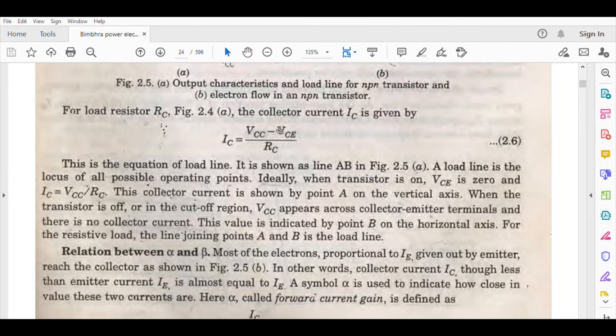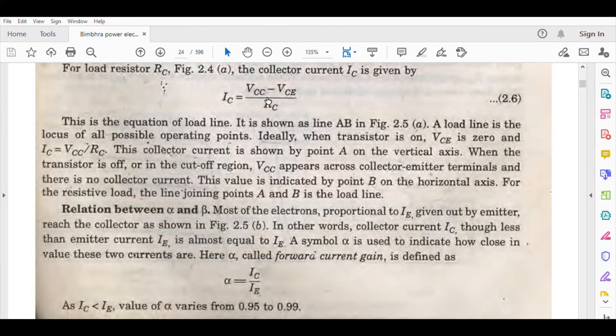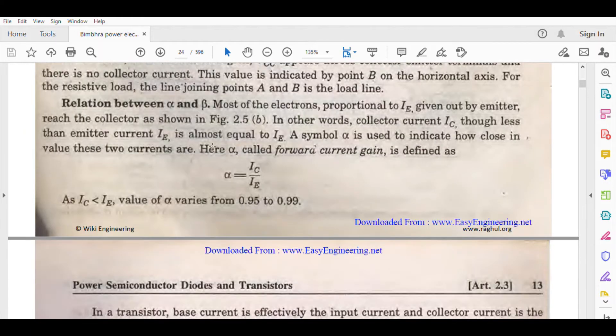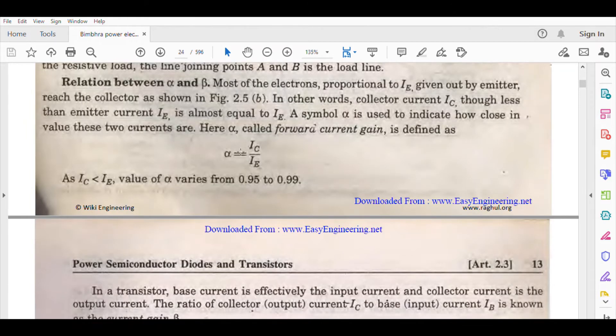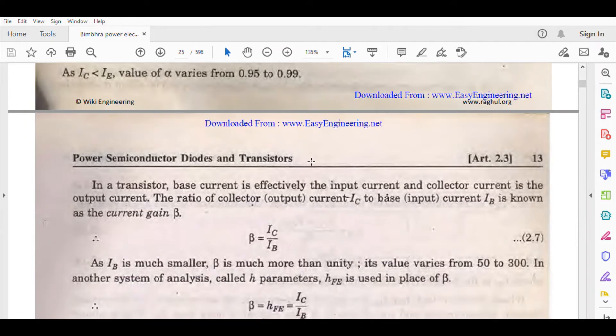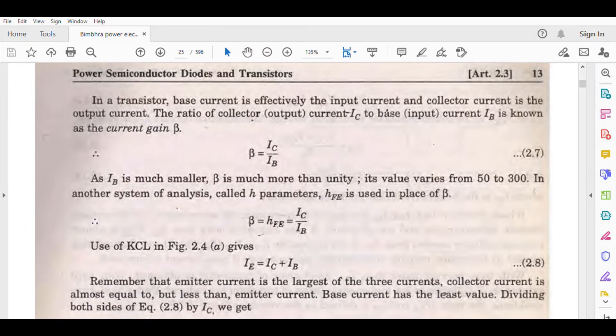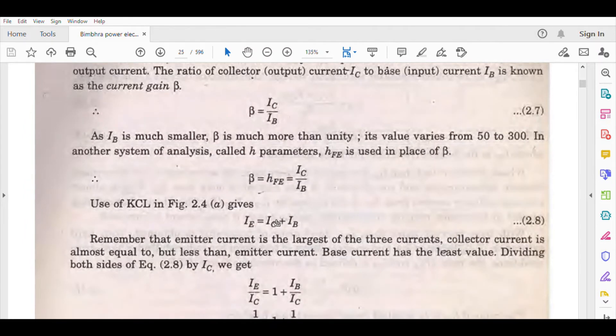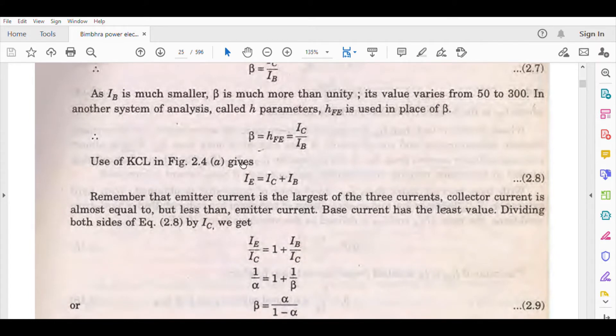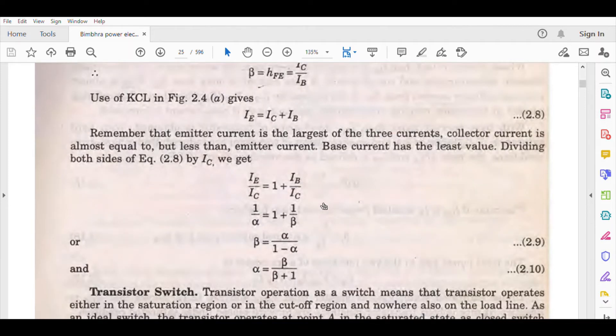The IC relation can be derived: VCC minus VCE upon RC. Using KCL, you can derive the relationships. Alpha and beta: alpha is 0.95 to 0.99, beta is IC upon IB, which we discuss as HFE when we study analog electronics. KCL gives us IE equals IC plus IB. Emitter current always equals collector plus base current, which we also know. This is the relation between alpha and beta, which you've already learned.